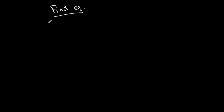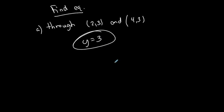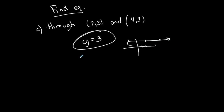Let's find the equation of the line through the points (2, 3) and (4, 3). You can go through the process of finding the slope and all that, but I notice that the y-coordinates are the same. So y equals 3 is the equation. I expect a horizontal line — (2,3) is here, (4,3) is here. Horizontal line: y equals 3. This is also a constant function; I can write it in function notation. The slope is 0.